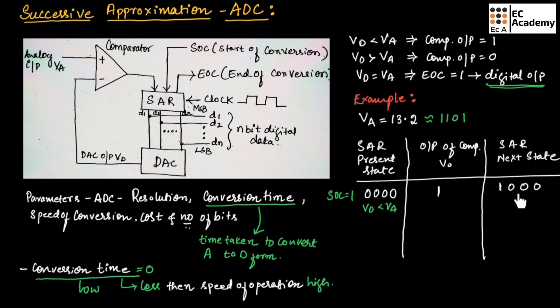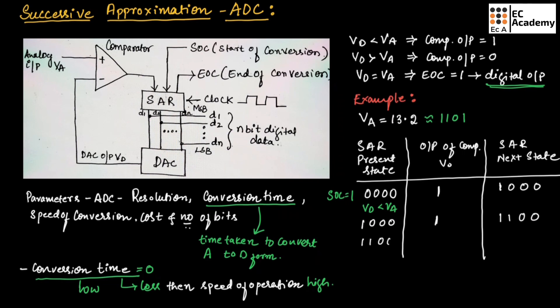This 1, 0, 0, 0 is given as input to the digital to analog converter. The present state of SAR is 1, 0, 0, 0. Again, this value is less than the analog input, so the output of comparator will be 1. This 1 will replace the next bit in SAR, and the next state of SAR will be 1, 1, 0, 0.